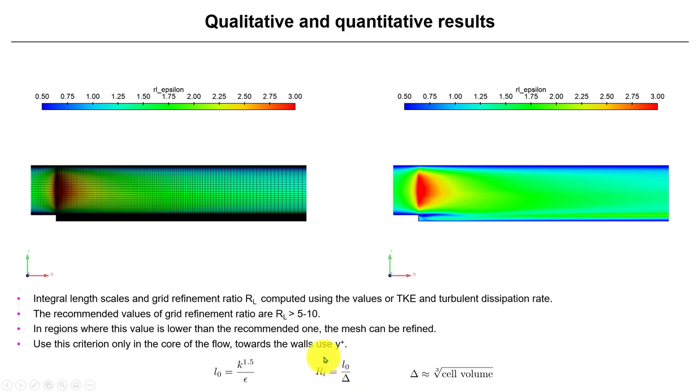This is how you compute integral scale - you put it here, this quantity can be computed in Fluent, and this will give you this metric. The minimum for RANS simulations to get good results, and in the limit of scale-resolvable simulation, will be five ideally ten.